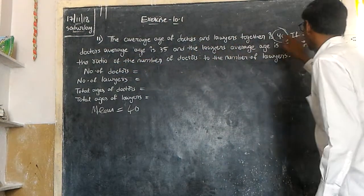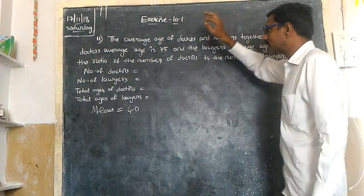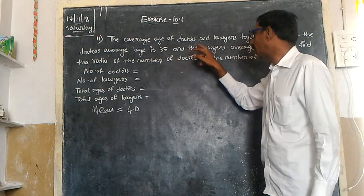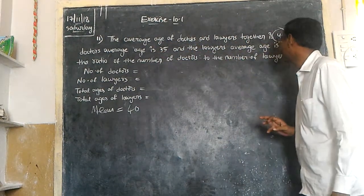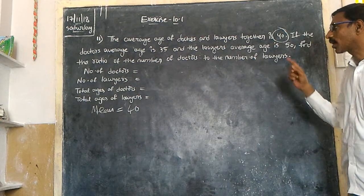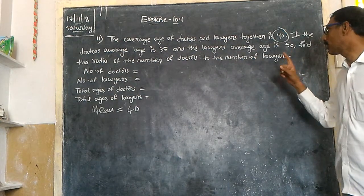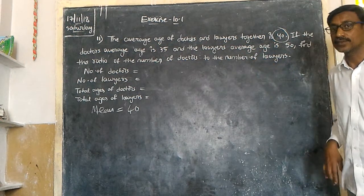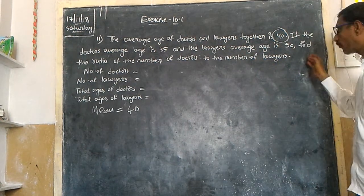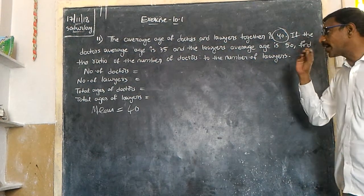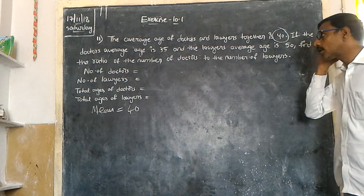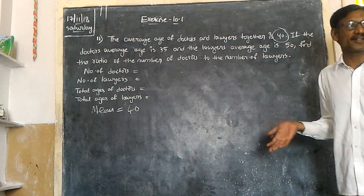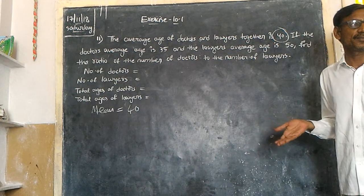If the doctor's age is 35 and the lawyer's age is 50, find the ratio of the number of doctors to the number of lawyers.